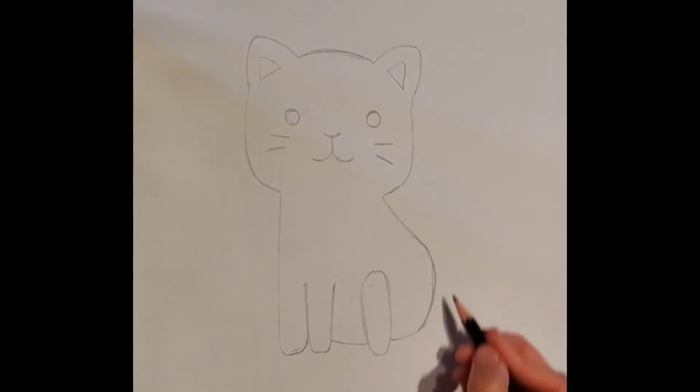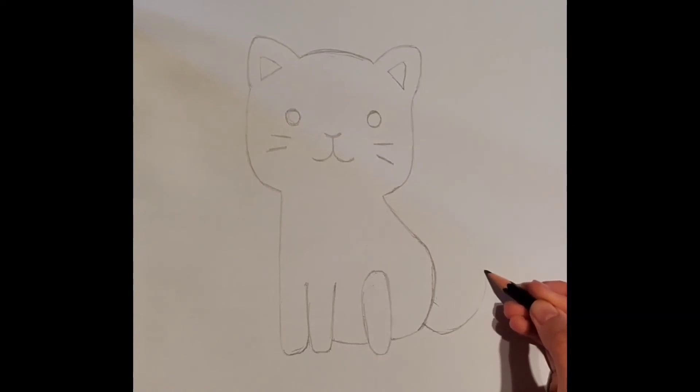Now, our cat is almost complete, it's time to do the tail. Taking from the curves we've just created, extend a line upwards and draw it out like a snake shape.